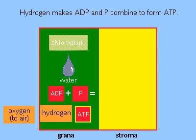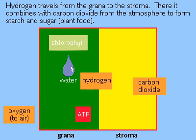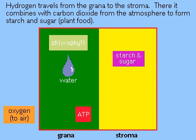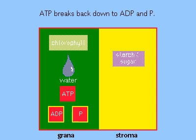In the grana, carbon fixation uses the energy from ATP and another compound, NADPH, to drive reactions that form the nutrients starch and sugar from water and carbon dioxide. The ATP then breaks down to ADP and phosphate.